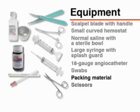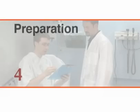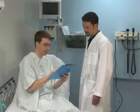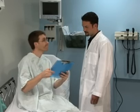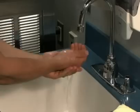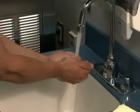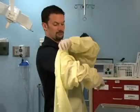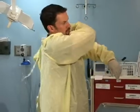Items important for the incision and drainage itself include a scalpel blade with handle, a small curved hemostat, normal saline with a sterile bowl, and a large syringe with a splash guard or a needleless 18 gauge angiocatheter for irrigation of the wound. Swabs for bacterial culture, wound packing material, scissors, gauze, and tape should all be available to complete the procedure and dress the wound.